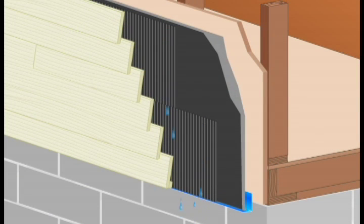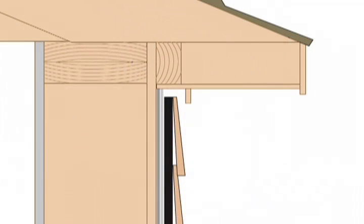Sure Cavity is the only drainage plane in the market that has vertical compartmentalized channels that get the water out fast. The vertical compartmentalized channels not only promote rapid drainage but also vent to improve drying time and promote pressure equalization.